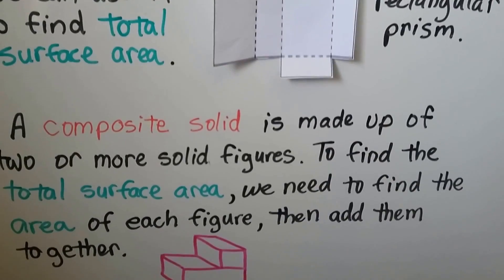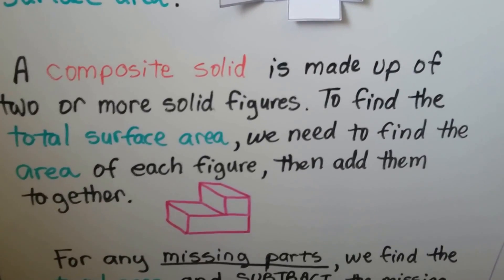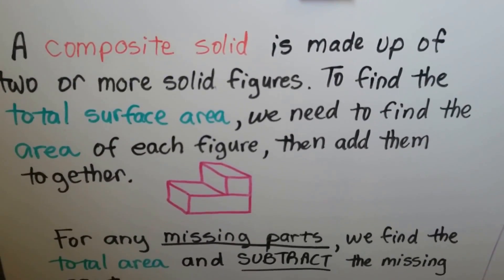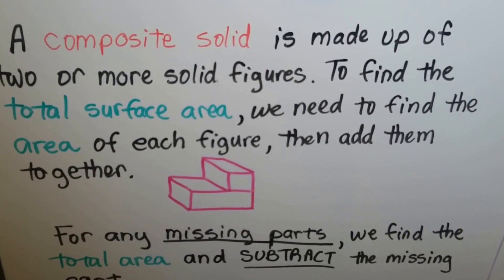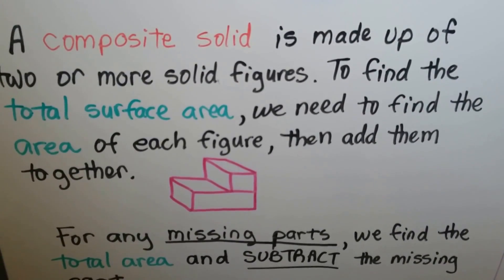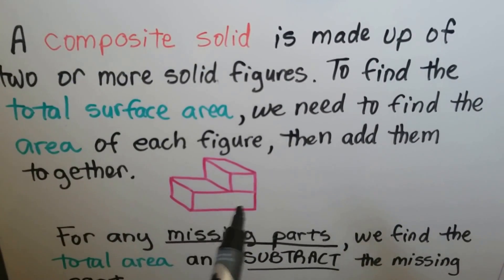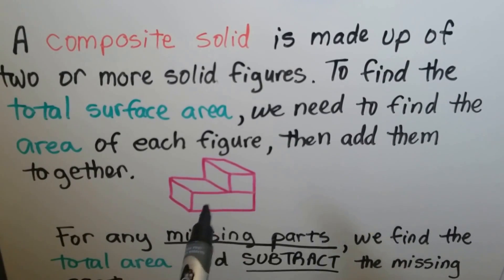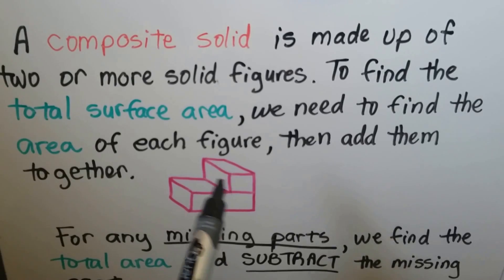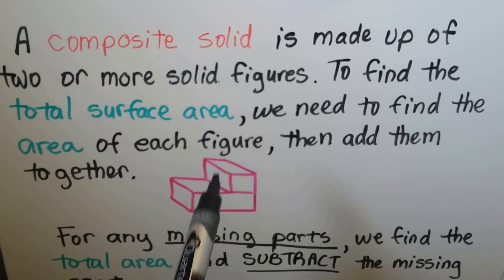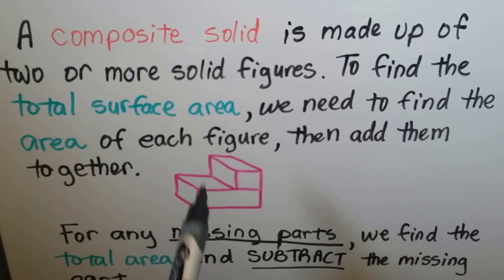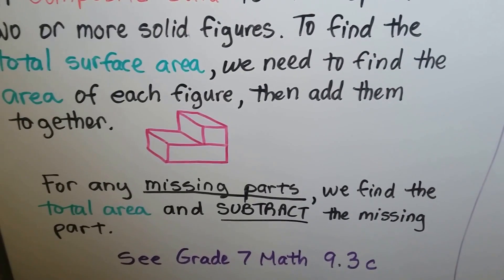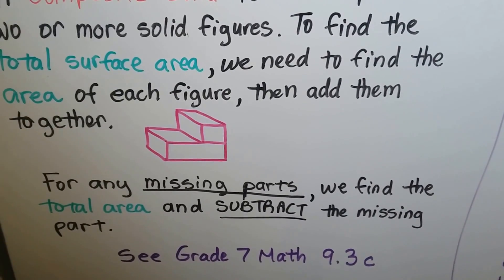A composite solid is made of two or more solid figures. To find the total surface area, we need to find the area of each figure and then add them together. We would find the surface area of this big bottom box and then this top piece that kind of looks like a stick of butter. We add them together, and for missing parts, we find the total area and subtract that part.